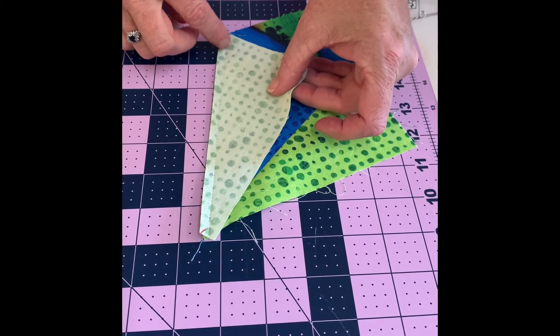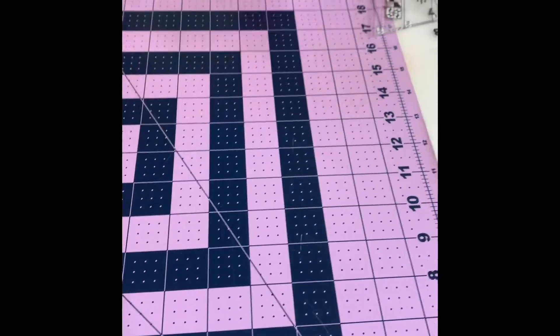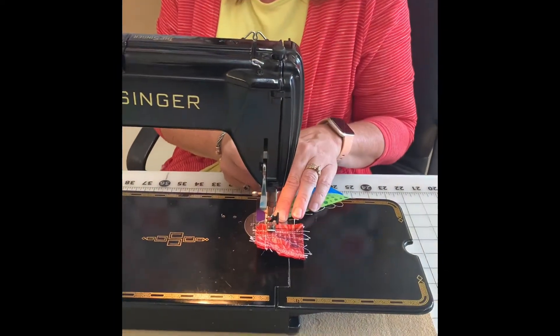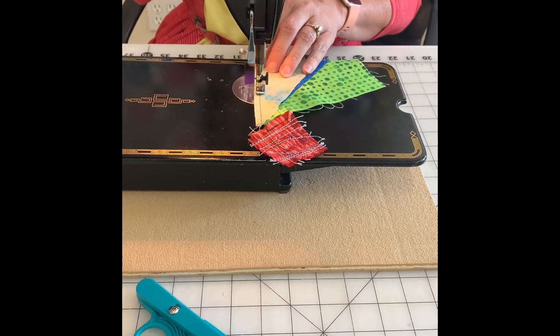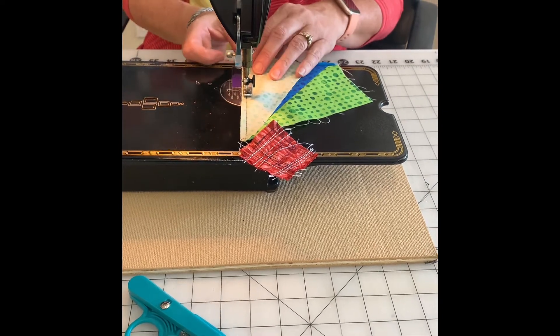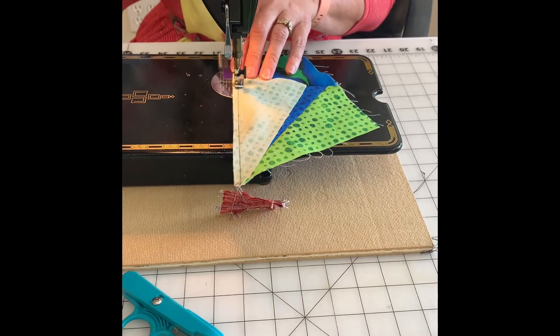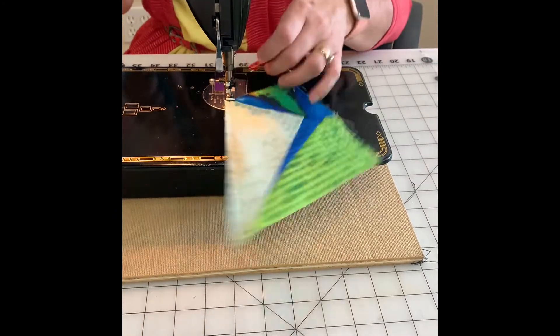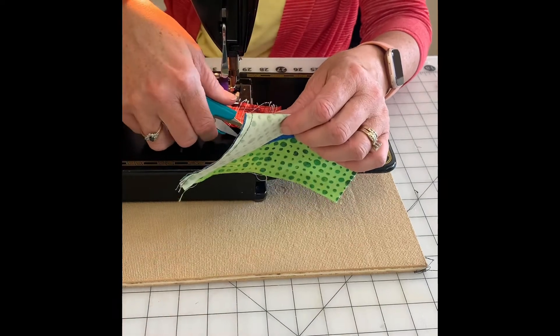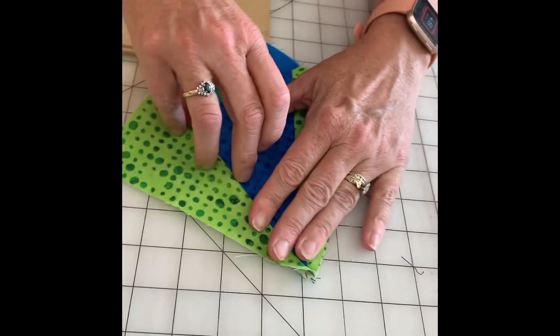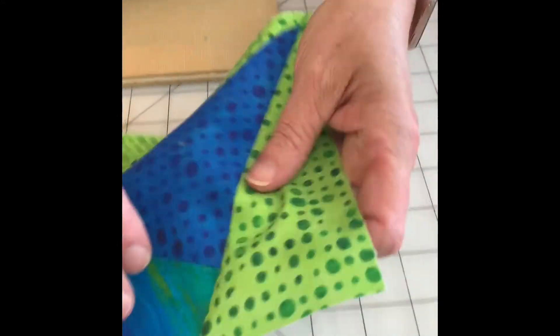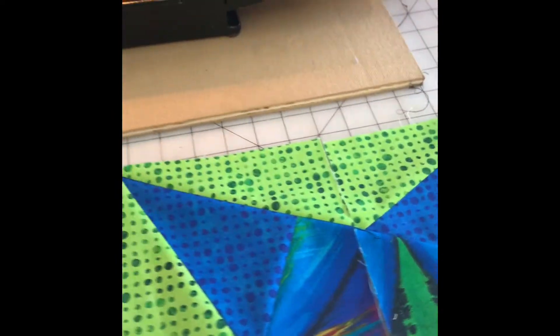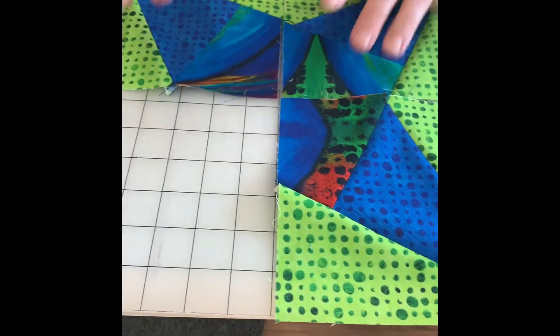I'm going to flip this over and now I don't have a dog ear, but I'm going to sew. And that is your block. That's your block. So you'll do this four times. And there's half of it. And we're missing one. And there's the other half.